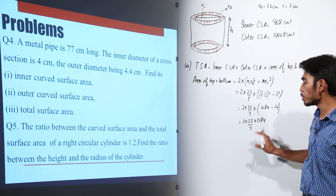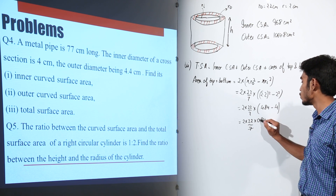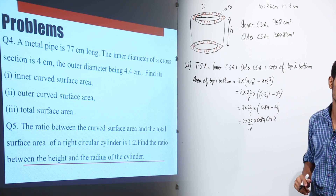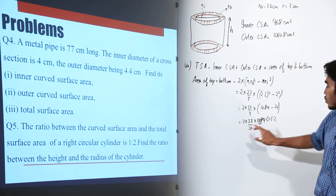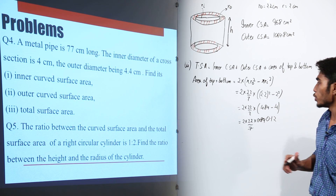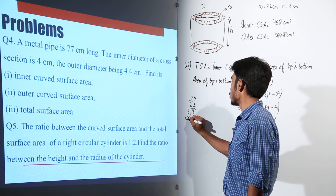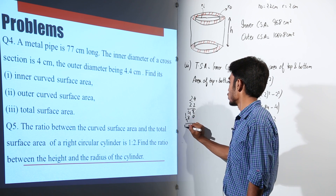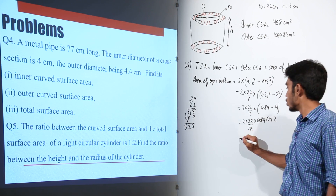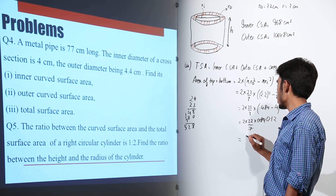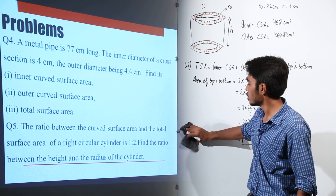Since 84 is a multiple of 7, it is beneficial to use π as 22/7 rather than 3.14. So 0.84 divided by 7 gives 0.12. Then 2 × 0.12 × 22 — that is 0.24 × 22 — gives us 5.28 cm².